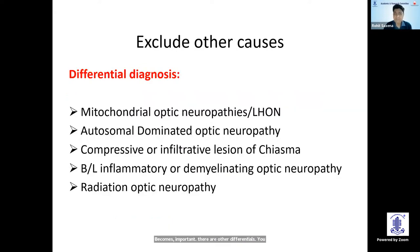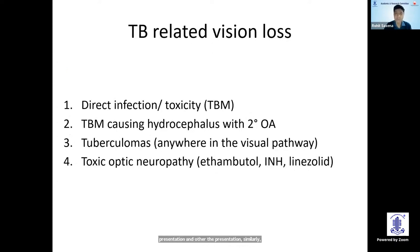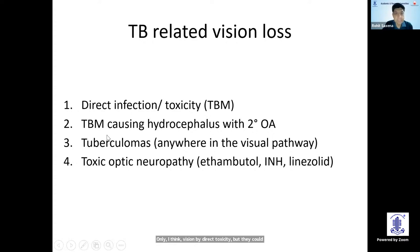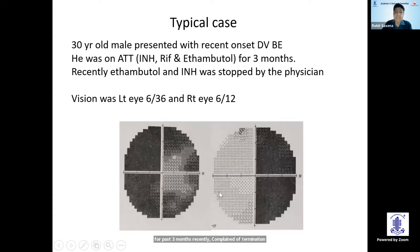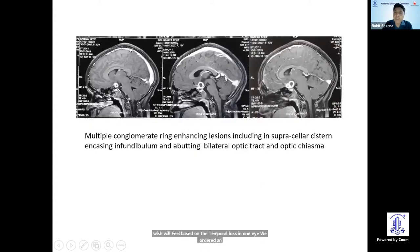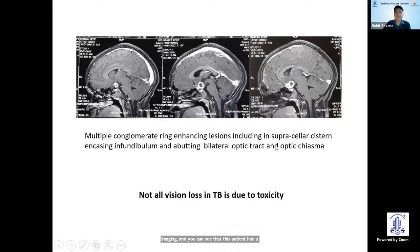Not all patients on ATT have toxic optic neuropathy — there are other differentials to be aware of. Tuberculosis can also affect vision directly through tubercular meningitis, TBM causing hydrocephalus with secondary optic atrophy, and tuberculomas which can occur anywhere in the visual pathway. For example, a patient on ATT for three months with diminution of vision had temporal field loss in one eye; imaging revealed a tuberculoma sitting right on the chiasma, responsible for the vision loss.